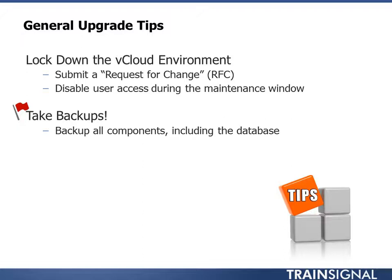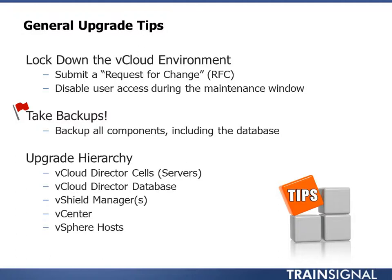Don't make the mistake of assuming it'll work fine the first time. There's always a chance you hit bad luck — a corrupted table because the disk isn't good on your SQL Server, something you don't find out about until the upgrade. The final piece is the upgrade hierarchy: a top-down upgrade process, starting with the logical top of the stack — vCloud Director cells — and working down toward the physical hosts. This is opposite of a bottom-up approach, which starts with physical infrastructure and works up toward management.